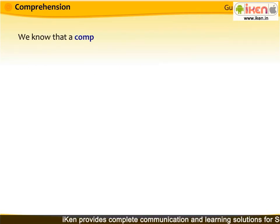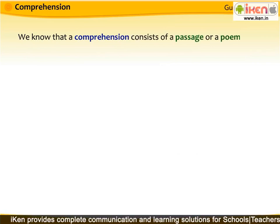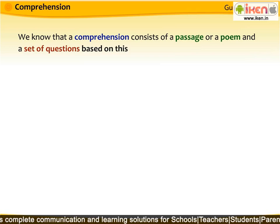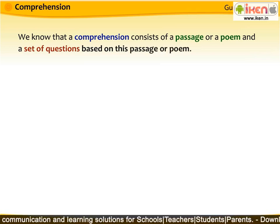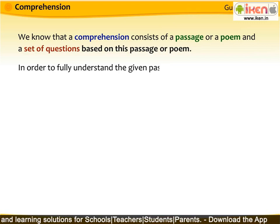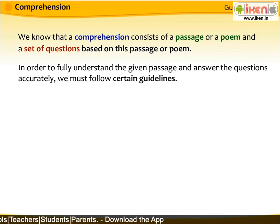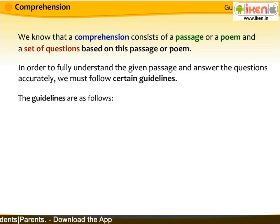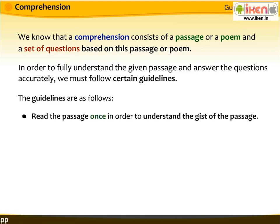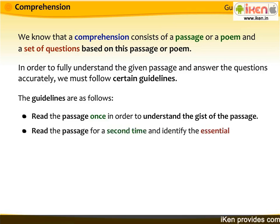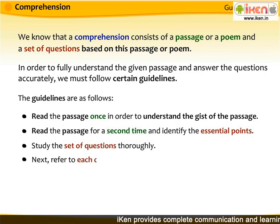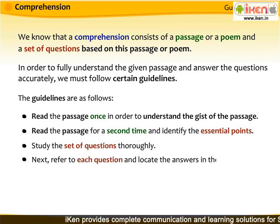A comprehension consists of a passage or a poem and a set of questions based on this passage or poem. In order to fully understand the given passage and answer the questions accurately, we must follow certain guidelines. First, read the passage once in order to understand the gist of the passage. Second, read the passage for a second time and identify the essential points. Third, study the set of questions thoroughly. Next, refer to each question and locate the answers in the passage.